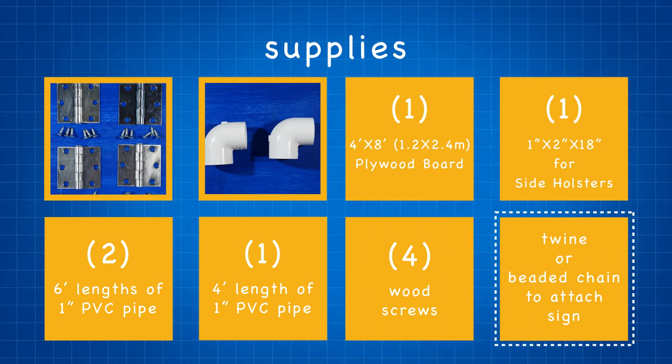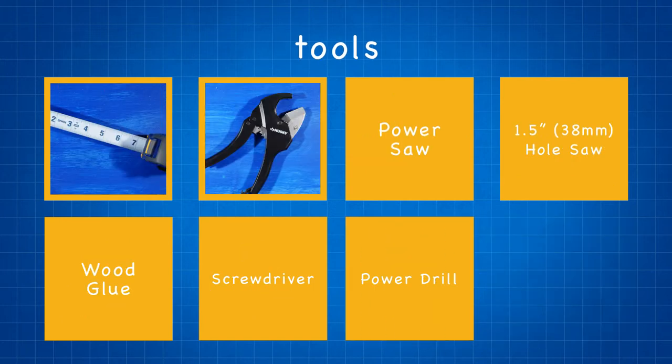Twine or beaded chain to attach the sign. Tools for this project include a tape measure, a pipe cutter, a power saw that can be a table saw or a circular saw, a 1.5 inch hole saw, some wood glue, a screwdriver, and a power drill.